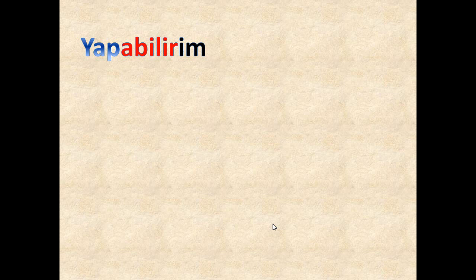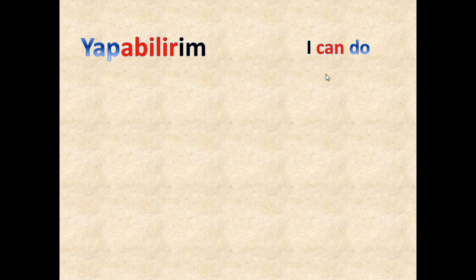'Yapabilirim' — this is the first verb. We have 'yap' as the root. Because we have an 'a' sound, we have 'abilir', and we have the suffix 'im', which means 'I'. So 'yap' means 'do', 'abilir' means 'can' or 'may' or 'am able to'. In all examples I have translated to 'can', but consider that this can also mean 'may' or 'able to' depending on attitude. 'Yapabilirim' means 'I can do'.